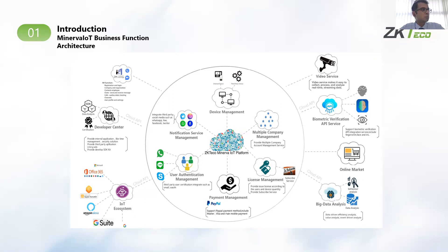Based on these core services, other services and features are provided by the platform, which include an instant messaging service that allows for team collaboration platform creation. We have a developer center which allows individuals and enterprises to build and publish their own solutions. The platform also allows easy integrations to third-party IoT ecosystems like Apple HomeKit, Google G Suite, Office 365, etc. We also have a video service which allows for online video streaming as well as snippet recording and viewing at a later time.